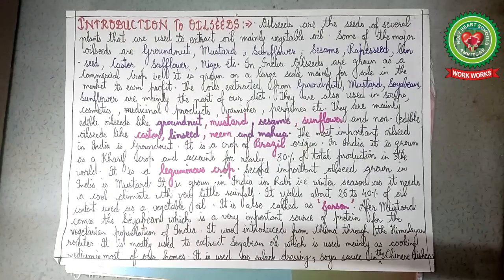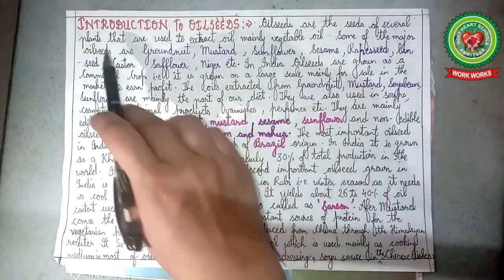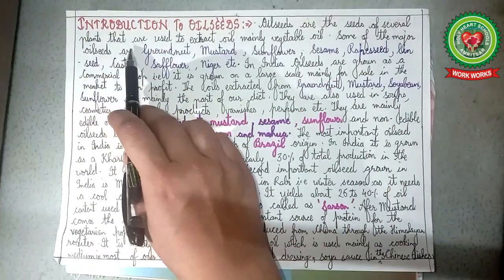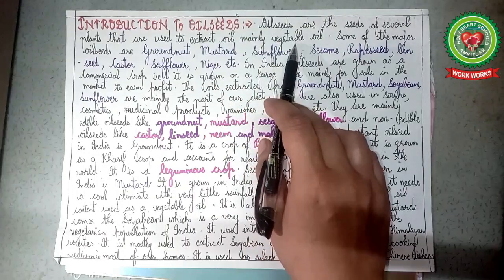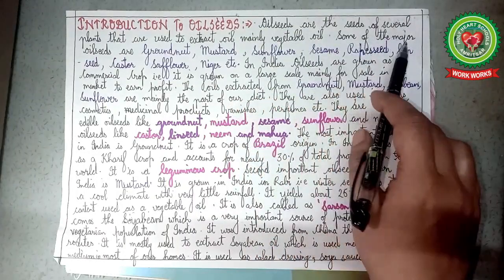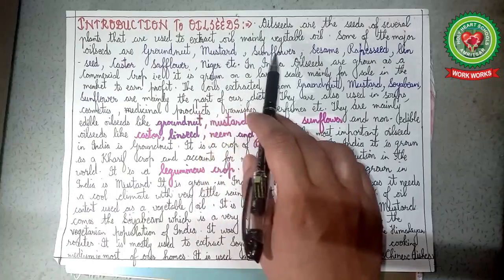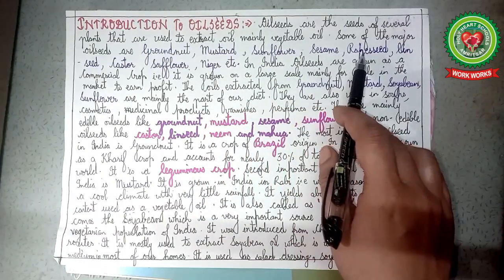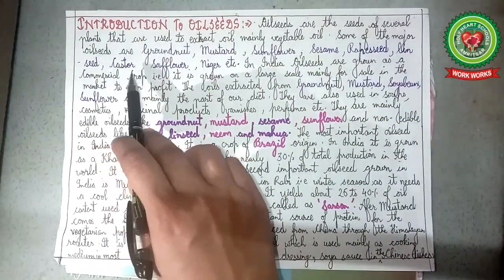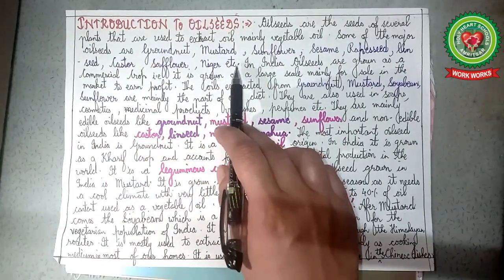Now coming to the topic of the day — oilseeds. Oilseeds are the seeds of several plants that are used to extract oil, mainly vegetable oil. Some of the major oilseeds are groundnut, mustard, sunflower, sesame, rapeseed, linseed, castor, safflower, niger, etc.